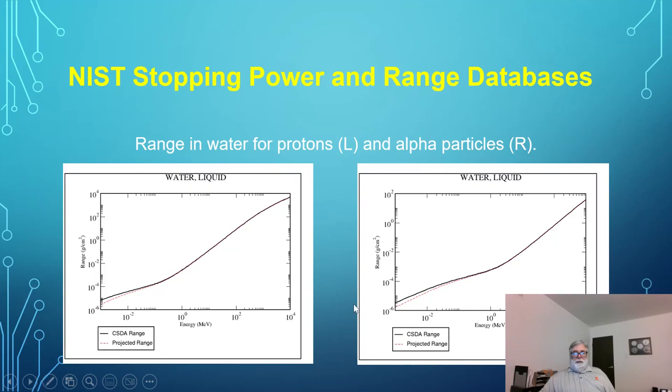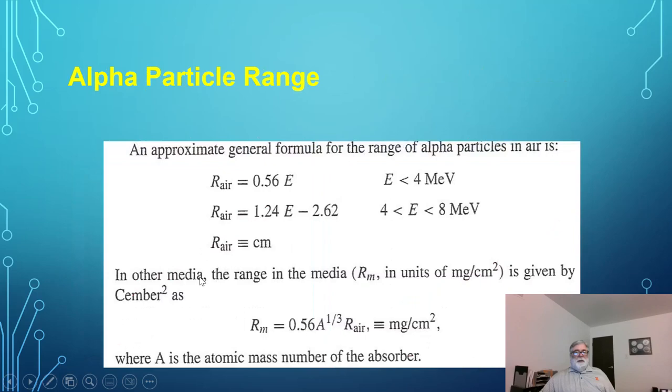So there's also an empirical formula that's approximate value for the range of alpha particle in air. And this is also in the Staben book. The values are shown here. And for other media, the range varies as the atomic mass of the material. Okay.